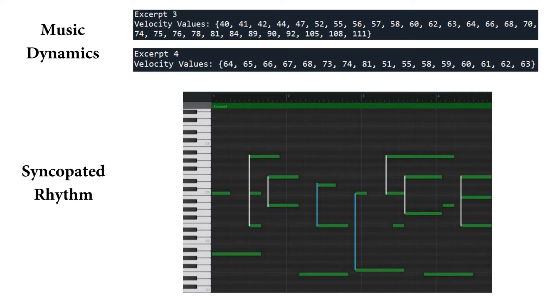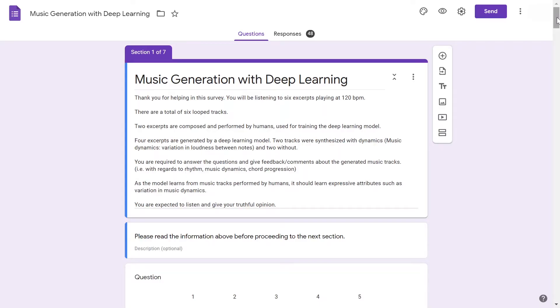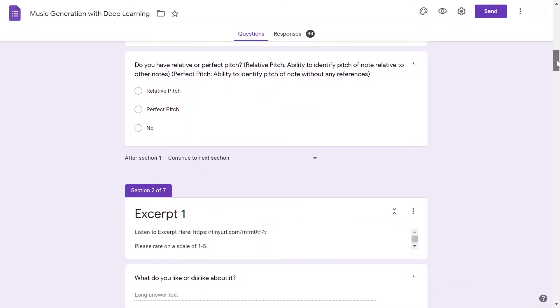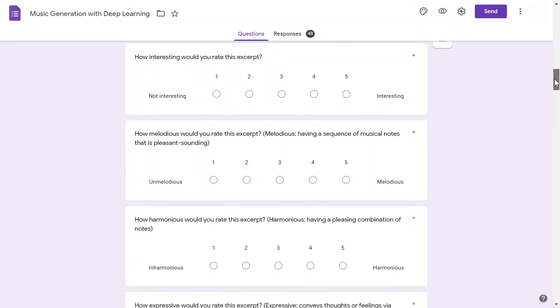The variation in music dynamics and syncopated rhythm was observed from the generated samples. A survey was conducted via Google Form to verify if participants can identify the music dynamics in the generated samples.